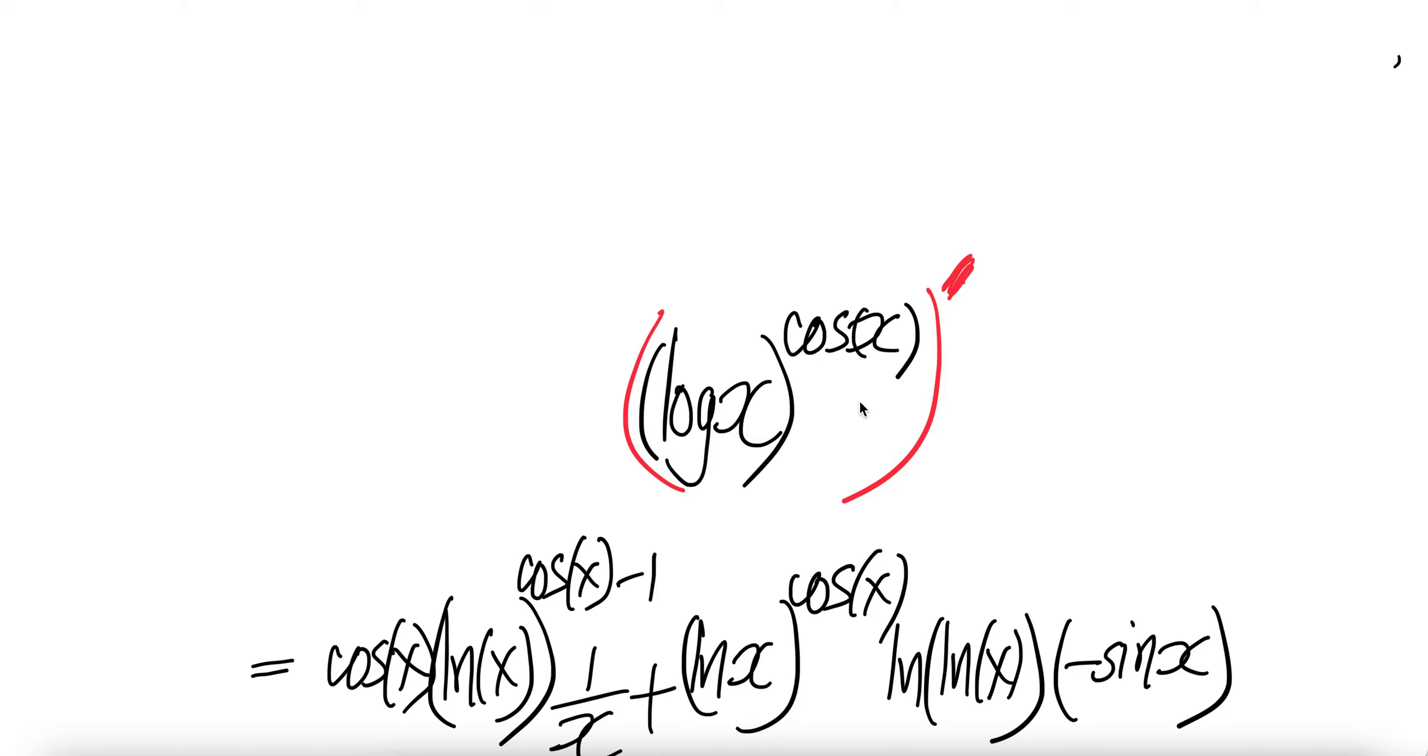So to get the derivative of this, cos X comes down. Let's make this ln X so we don't get confused, and the exponent will be cos X minus one.